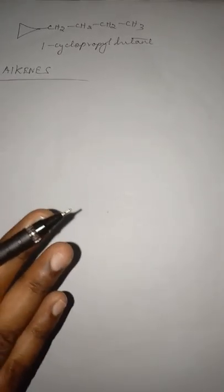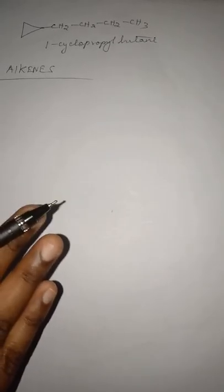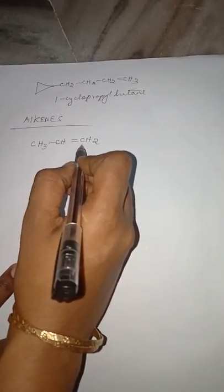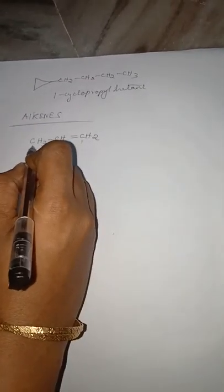Now let us see with an example. How will you name this alkene? You have to number in such a way that the double bond gets the minimum number. We number 1, 2, 3 — the double bond gets the minimum number. Therefore it is propene, which can also be written as 1-propene, though the number is generally understood.